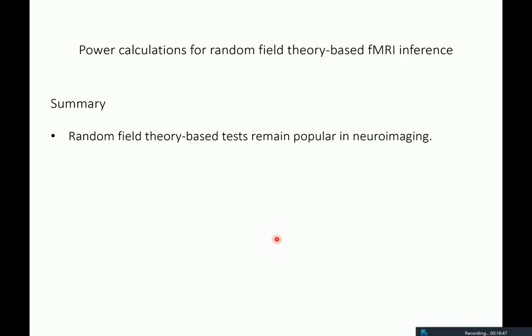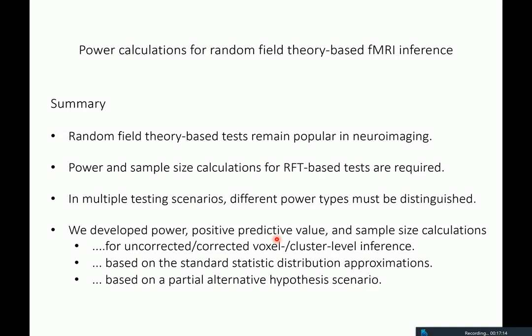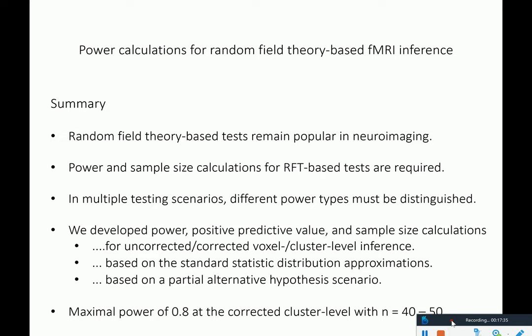In summary: random field theory-based tests remain popular in neuroimaging; we require power and sample size calculations for them because very little has existed. We also included positive predictive value calculations. When talking about power in multiple testing scenarios, we must carefully distinguish different kinds of power — not just the single-test power from undergrad statistics. We developed power and positive predictive values for uncorrected and corrected voxel and cluster level inferences implemented in SPM. The bottom line is that maximum power at the corrected cluster level can be achieved with 40 to 50 participants.